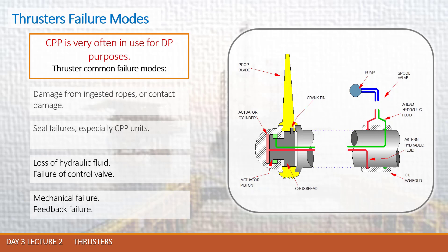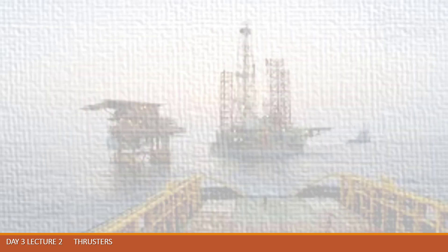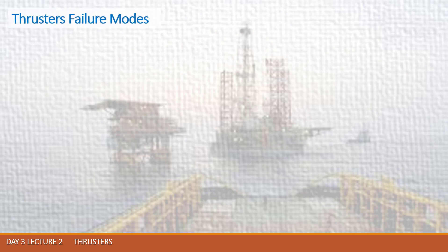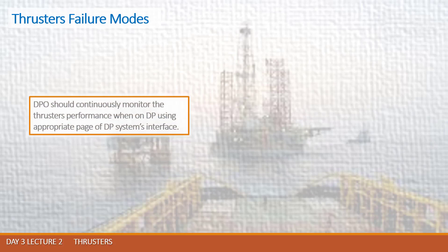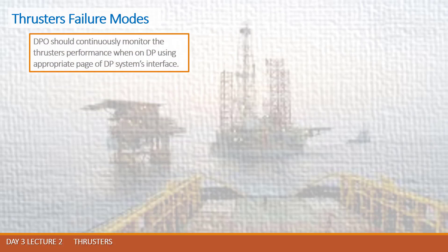That should be taken into account by any DPO. The DP operator should continuously monitor thruster performance when on DP, using the appropriate page of the DP system's interface. The operator's demands should match the system's feedbacks with minimum time delays. This is the main idea of monitoring of the thruster group.